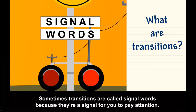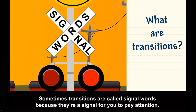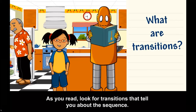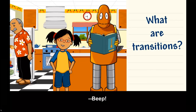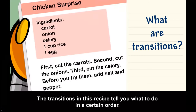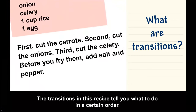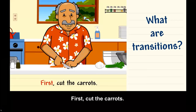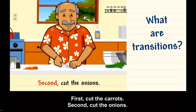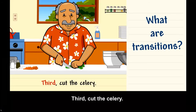Sometimes transitions are called signal words because they're a signal for you to pay attention as you read. Look for transitions that tell you about the sequence. The transitions in this recipe tell you what to do in a certain order. First, cut the carrots. Second, cut the onions. Third, cut the celery.